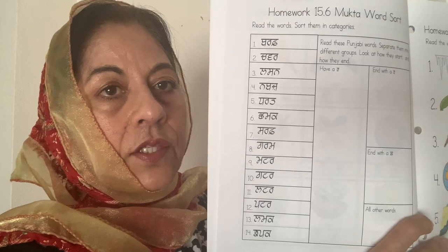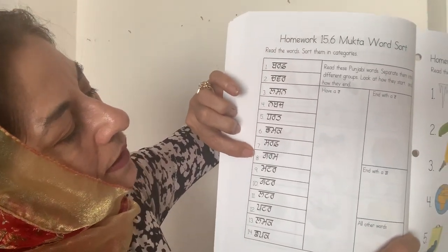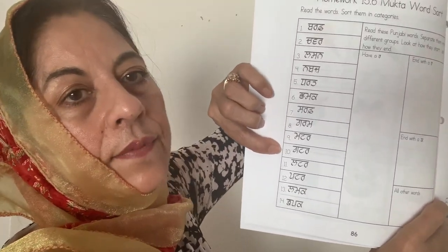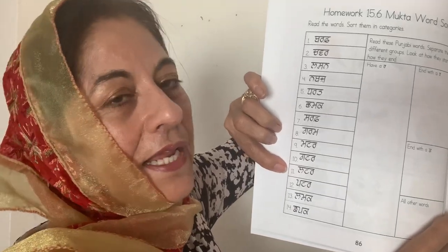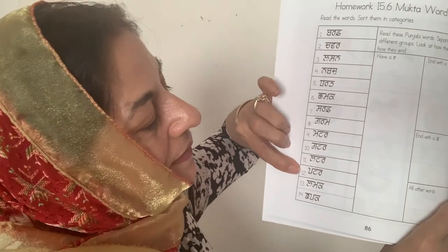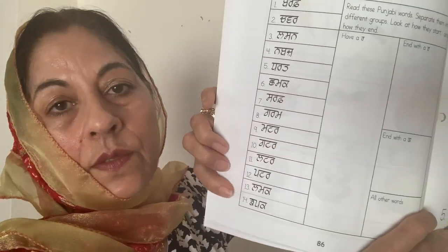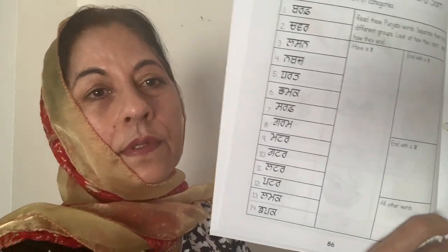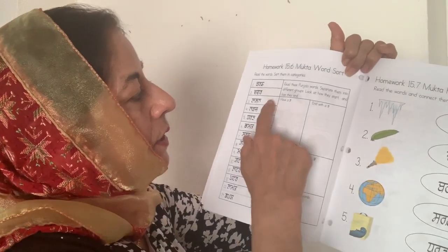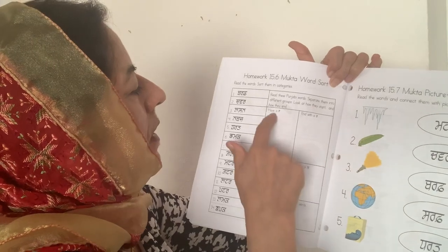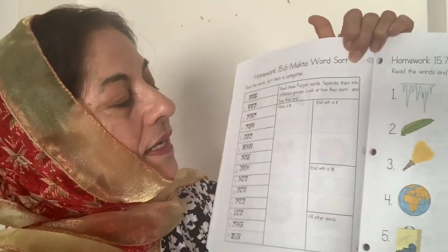Here are some extra words beyond those nine. Let's read them: Barf, Chavar, Lassan, Nabaz, Tarath, Chamak, Sarf, Garam, Matar. And these are new words: Gutter — when it rains the water goes in the gutter. Latar — it rhymes with gutter. Butter. Lamak means to hang. Chapak means to tug on or grab someone roughly. You are going to read these words and separate them into different groups — words that end with Rara, words that end with Kaka, and all other words.